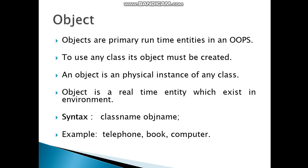First one is object. What is an object? Objects are primary runtime entities in any program. To use any class, its object must be created. An object is a physical instance of any class. Object is a real-time entity existing in the environment. The syntax is: class name followed by object name. Examples of objects include telephone, book, and computer.